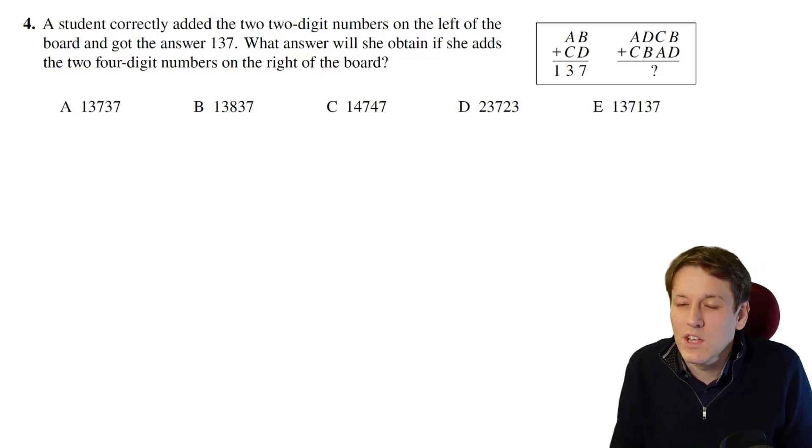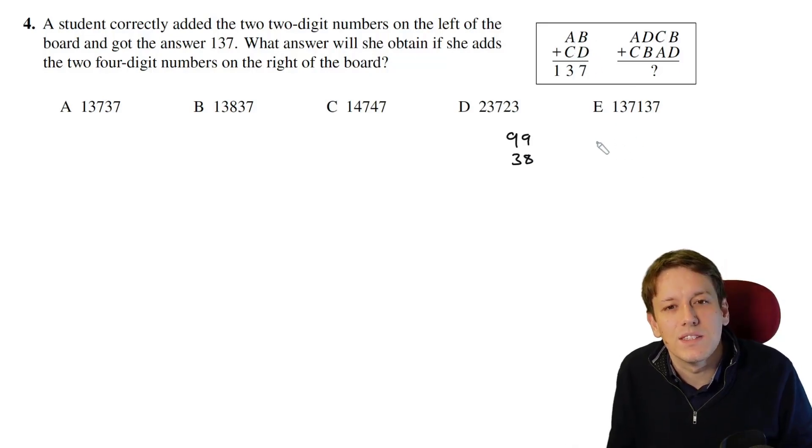Just pick the easiest thing you can think of. Let's do 99 plus 38, so A is 9, B is 9, C is 3, and D is 8.